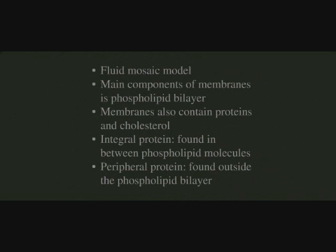And finally, let's look at cell membranes. A cell membrane can be explained using the fluid mosaic model. The main components of cell membranes include the phospholipid bilayer, proteins, and cholesterol. Speaking of proteins, there are two main types: integral proteins and peripheral proteins. Integral proteins are found in between phospholipid molecules, while peripheral proteins are found outside the phospholipid bilayer.